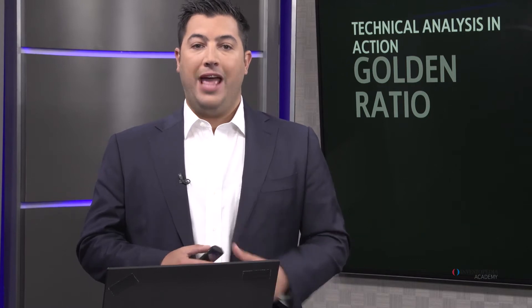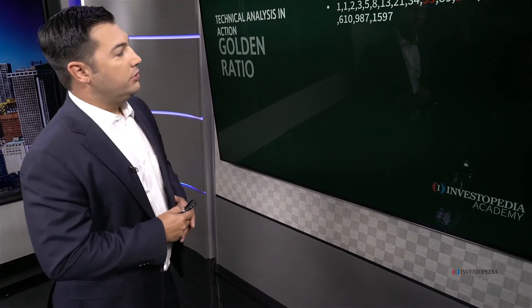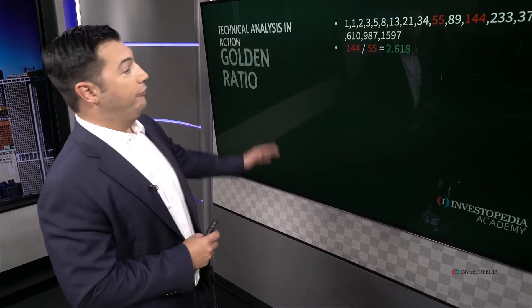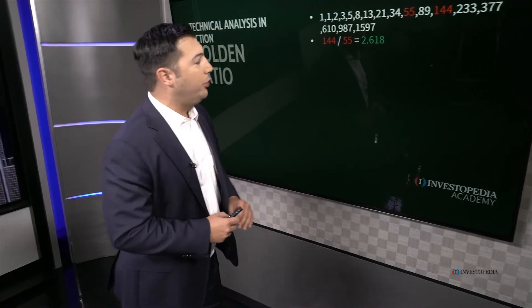We've already divided each number in the sequence by the number directly to the left of it. Let's take this one step further and divide each of these numbers by the number two steps to the left. Using 144 and 55 as our example, we are always going to get 2.618. The further away you get from zero along that sequence, the closer to exactly 2.618 you're going to get.